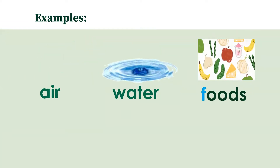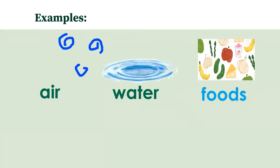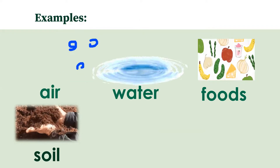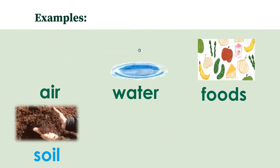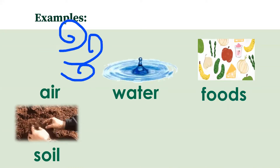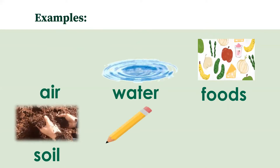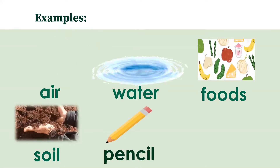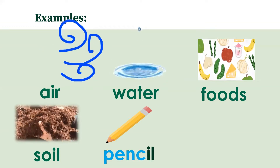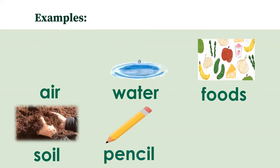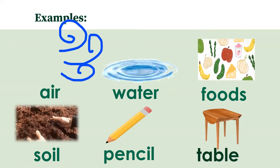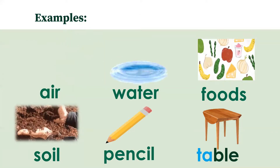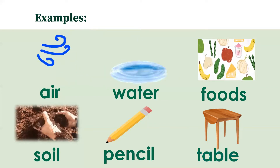Aside from air and water, we also have foods. Let's spell the word foods: F-O-O-D-S, foods. We also have soil. Let's spell the word soil: S-O-I-L, soil. Soil is another example of a non-living thing. Aside from soil, we also have pencil. Let's spell the word pencil: P-E-N-C-I-L, pencil — we use pencil in writing. And we also have table. Let's spell the word table: T-A-B-L-E, table. These are just a few examples of non-living things.